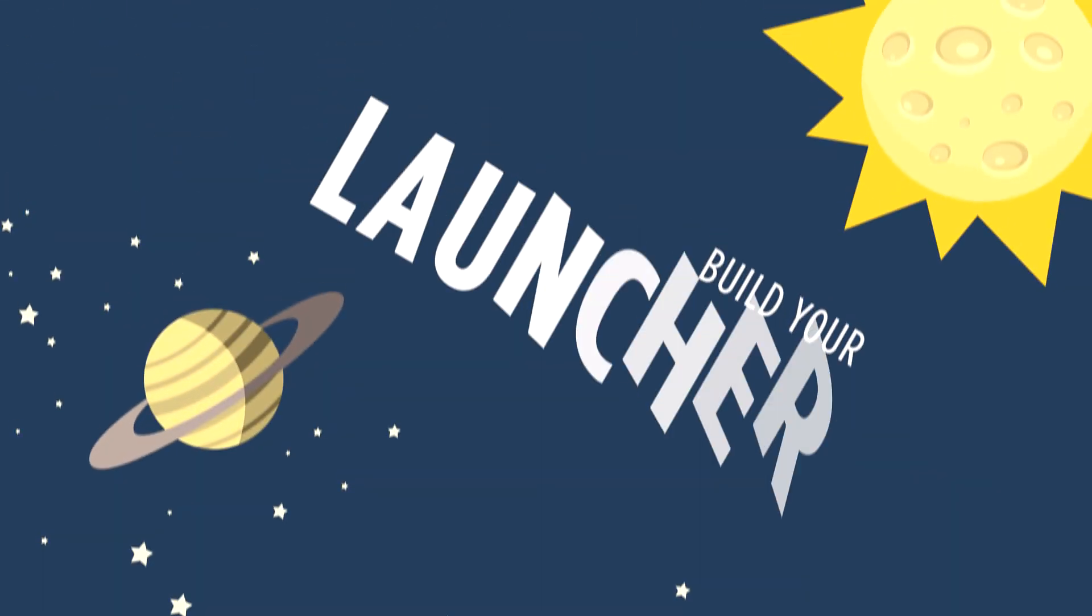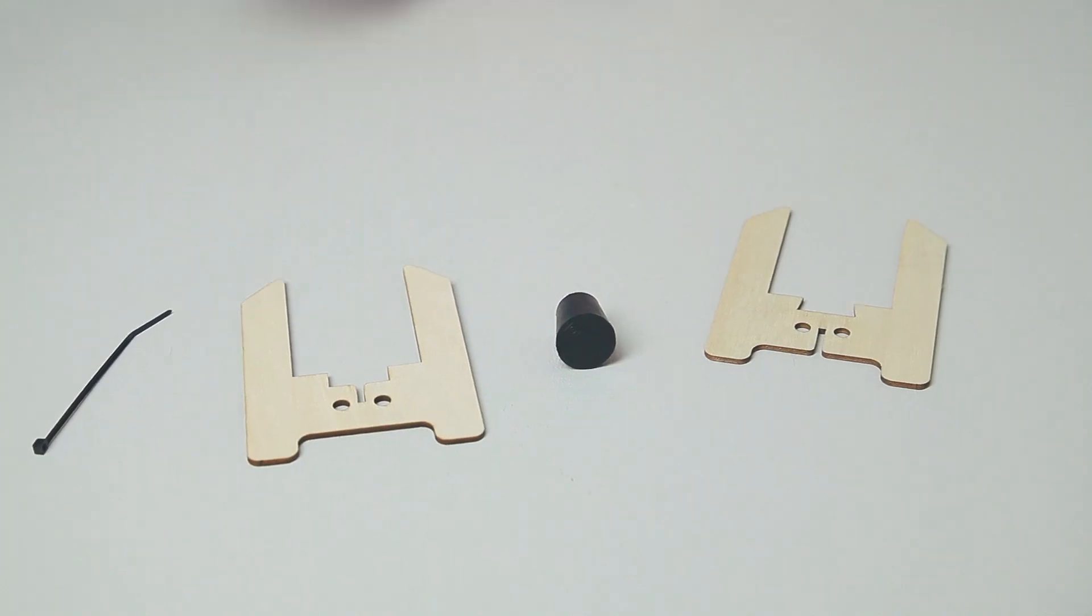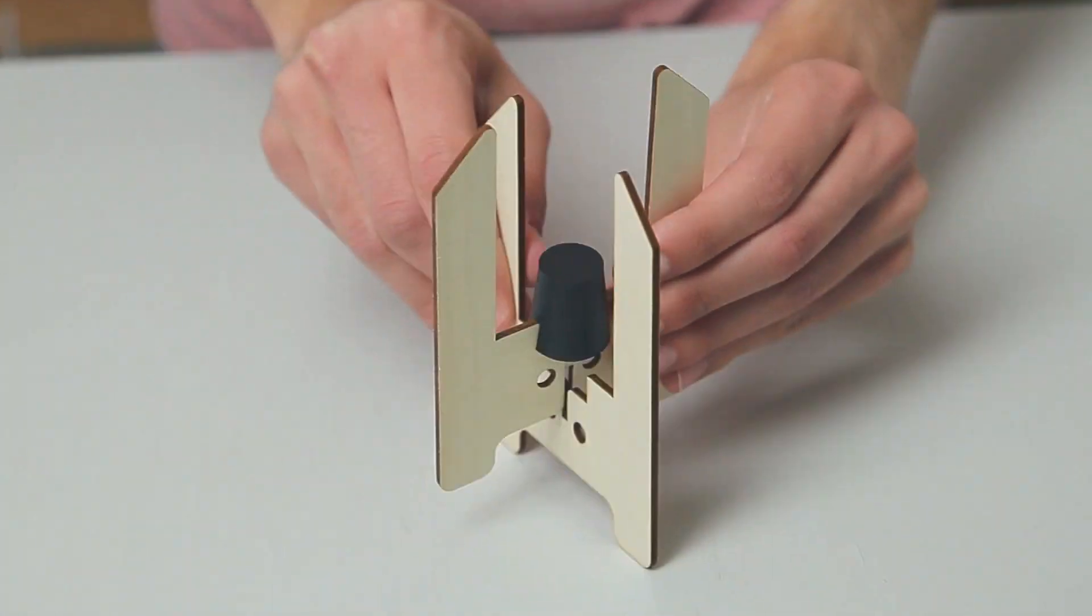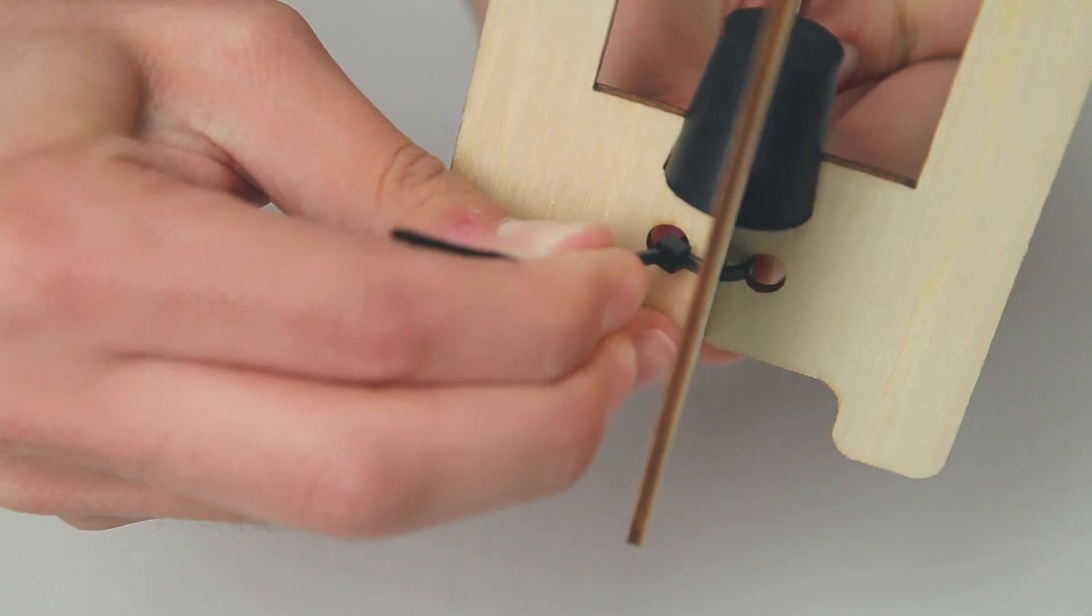First, let's build your rocket launcher. Grab the launcher piece with the angled notches and slide the cork in so it's nice and tight. Slide the two launcher pieces together and secure with a zip tie.